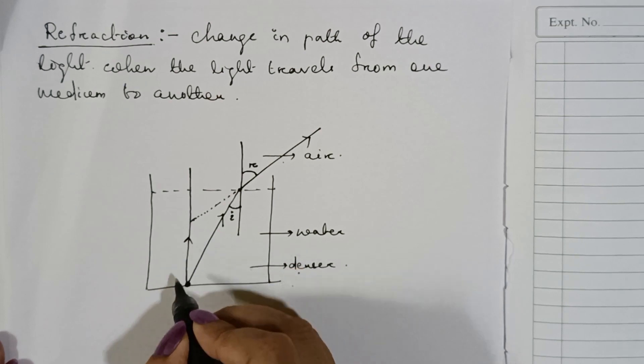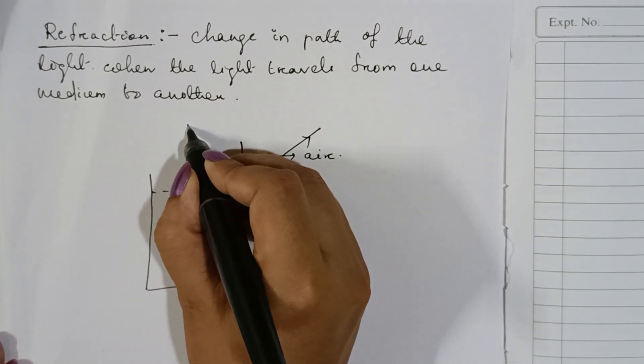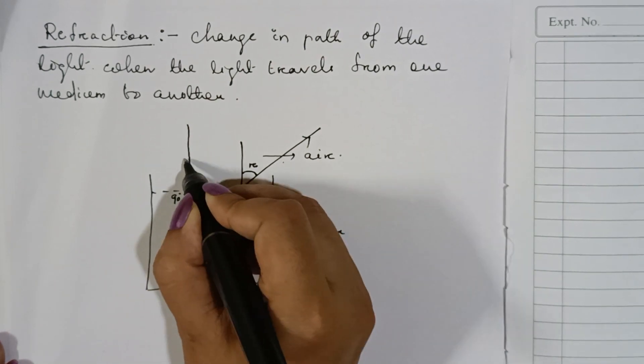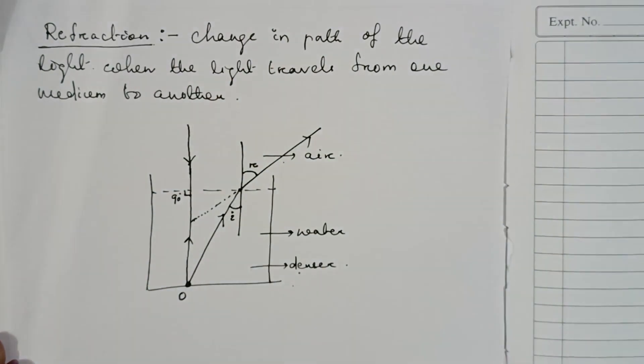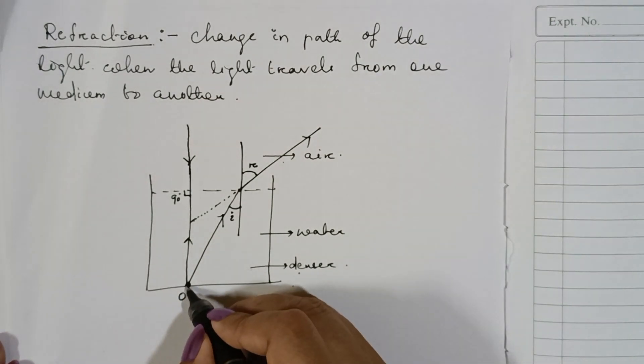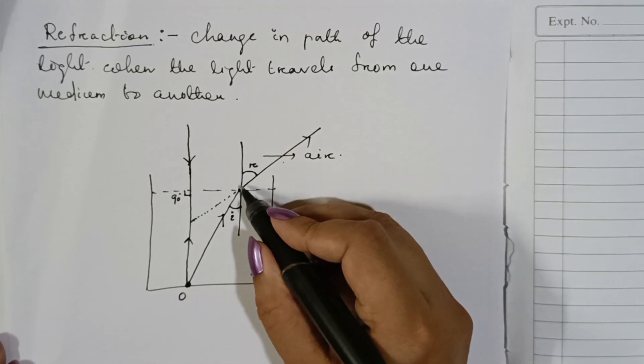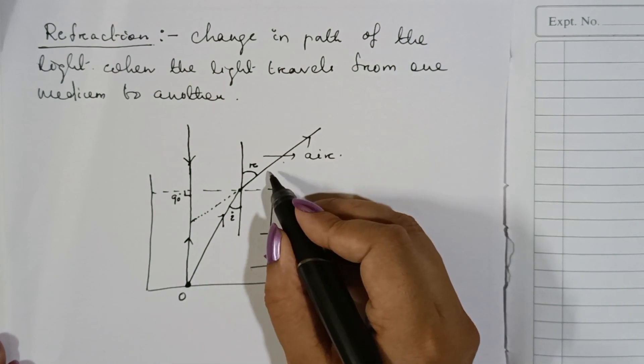And if you will take the ray that is moving normal to the interface or you can say it hits the interface at making an angle 90 degree. It will also return making an angle 90 degree. So there will be no change in the path of the ray. But whenever the light coming from the object moves obliquely. You can say this is obliquely moving.